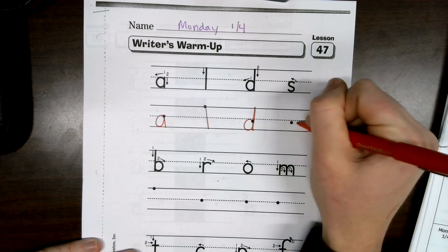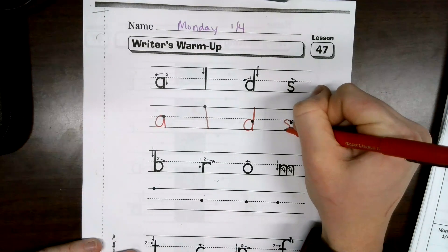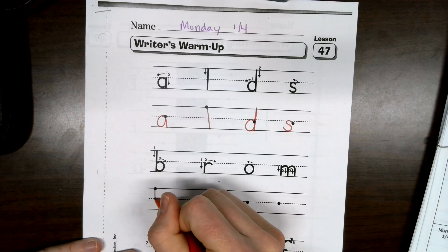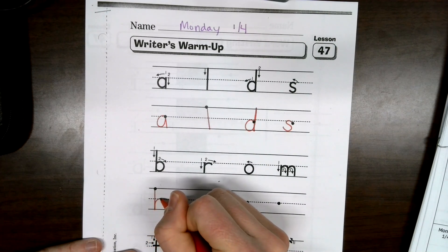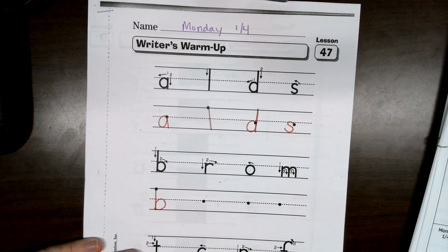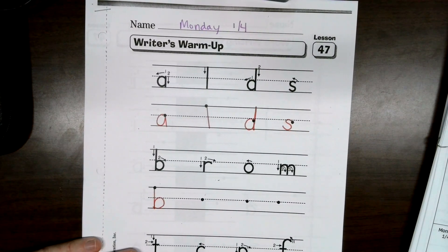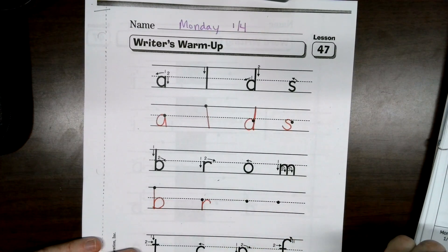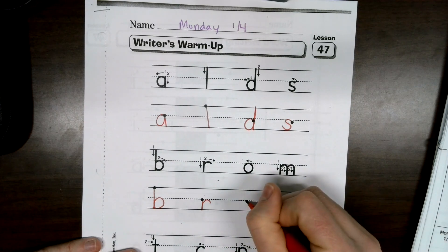Straight back down. S's. Our B's, you start at the top, come down, then come around. R's, start at the middle, go straight down, come back up and make your hook. Those are easy.